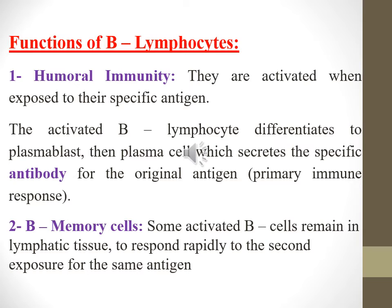Functions of B lymphocytes — humoral immunity. They are activated when exposed to their specific antigen. The activated B lymphocytes differentiate to plasmablast, then plasma cell, which secretes the specific antibody for the original antigen — called the primary immune response. Some activated B cells remain in lymphatic tissue as B memory cells, to respond rapidly to a second exposure to the same antigen.